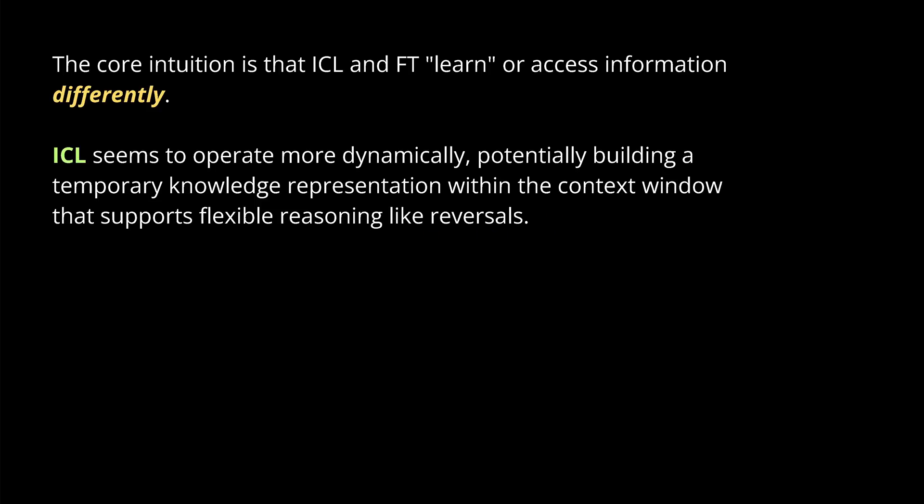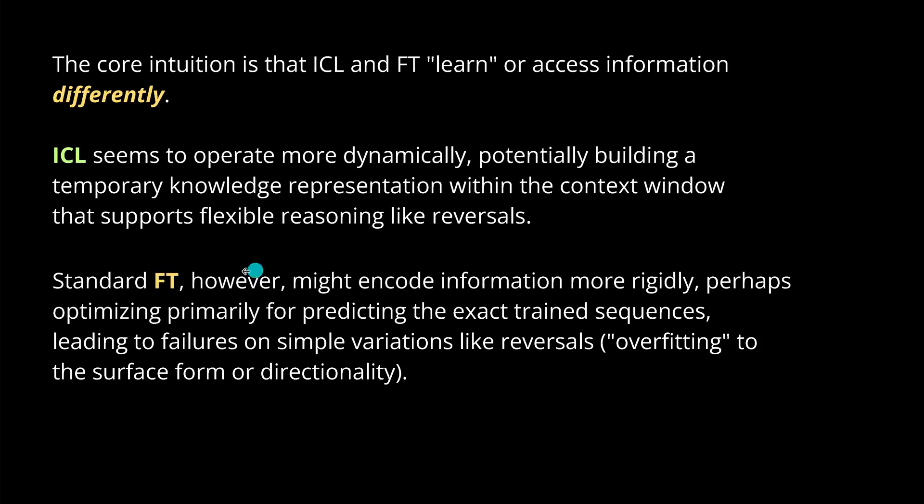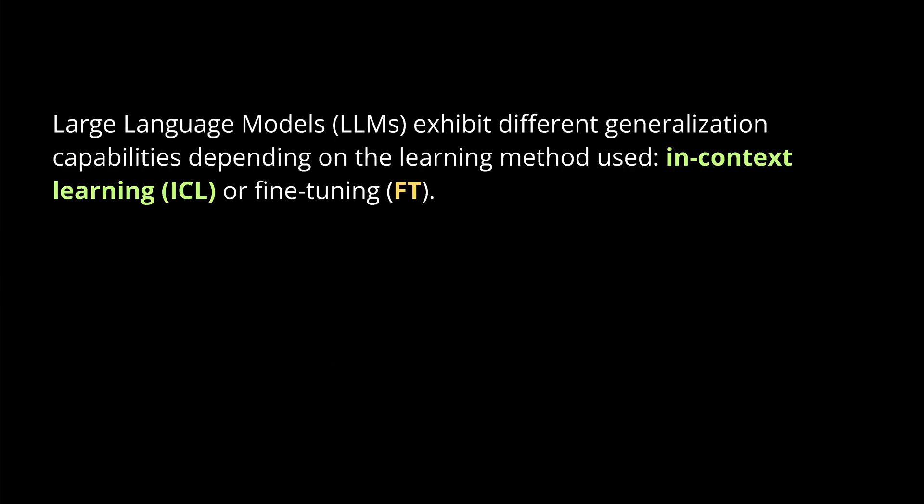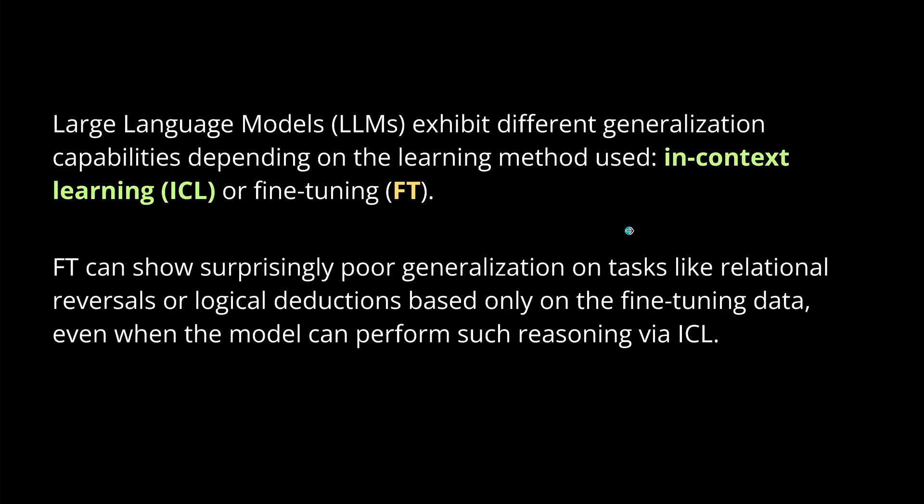In-context learning seems to operate more dynamically, building a temporal knowledge representation within the context windows that supports flexible reasoning like a reversal. And this is what we're looking for. You want to be that your LLM is able to reason here or have syllogisms that are activated that the system can handle. It doesn't break down. However, standard fine-tuning might encode information much more rigidly, optimizing primarily for predicting exactly the trained sequence. Nothing else. No understanding.